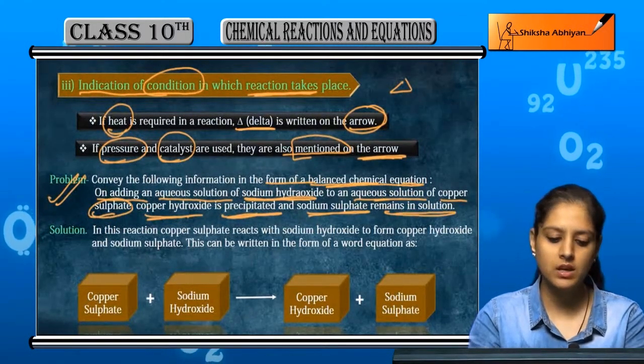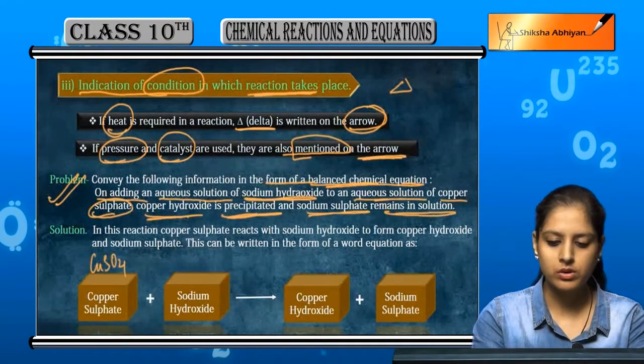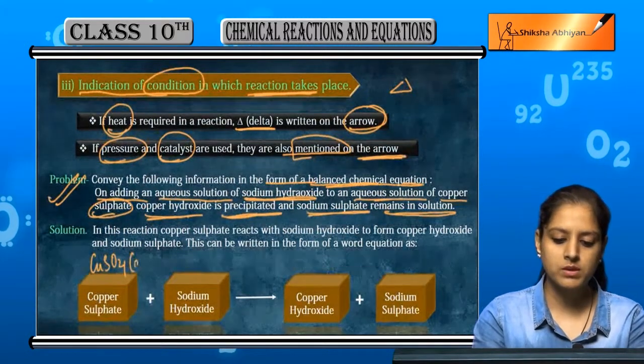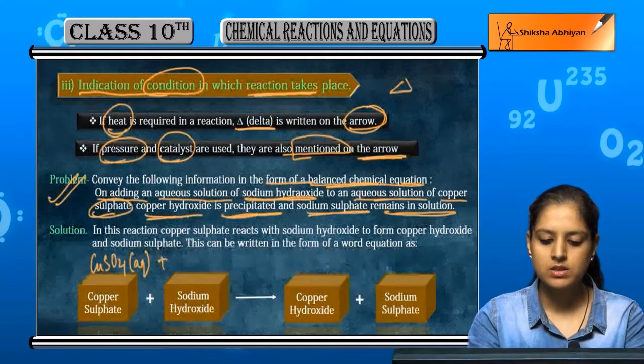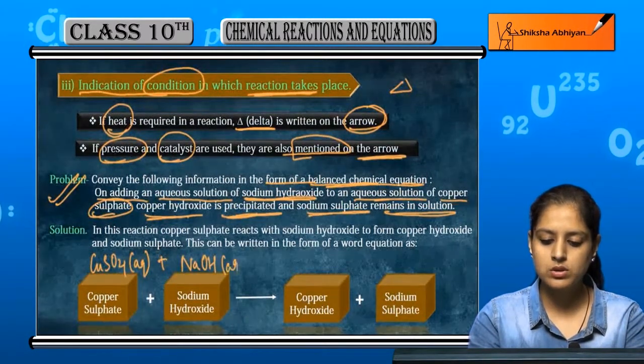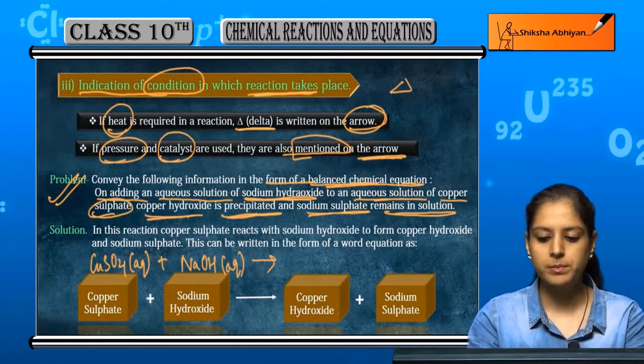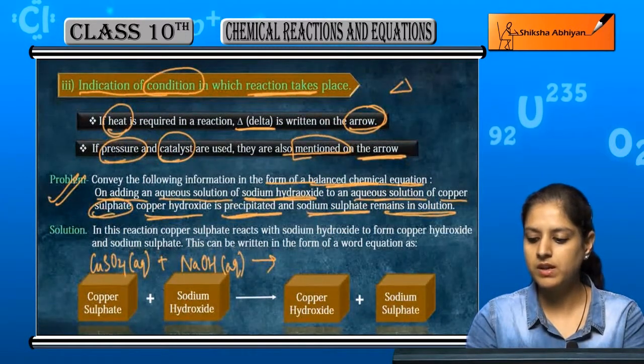How do we show this? Copper sulfate, that means CuSO4. They have said aqueous solution of copper sulfate, so we have written aq in the bracket. Plus sodium hydroxide, that is NaOH, which is also an aqueous solution. It is precipitated and sodium sulfate remains in the solution.